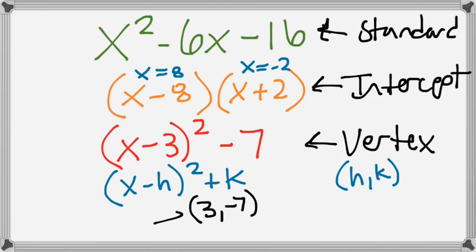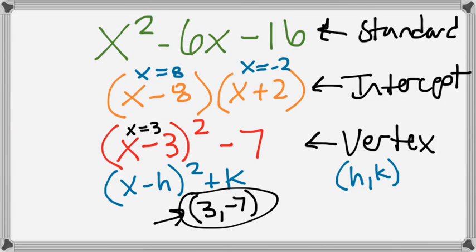The vertex is this number right here. The way you think about it is you do the opposite of what's with x. So it's x minus 3, which means x equals 3. If we were to solve what's in there, x would equal 3. And then the number on the outside, negative 7, is the y part of the vertex. So x minus 3 squared minus 7 gives vertex (3, negative 7).